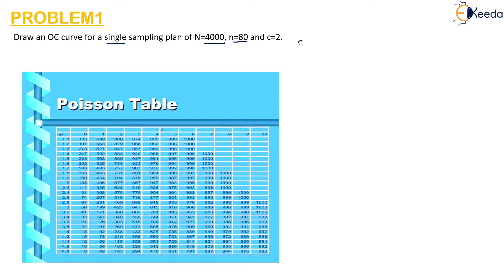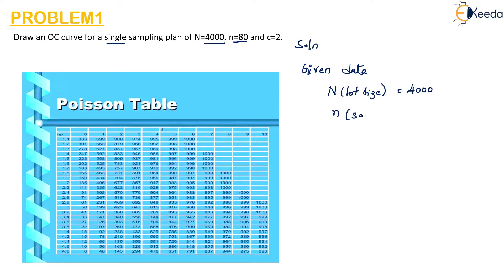For the solution, we will write the given data. N, that is the lot size, is 4000. Small n, that is the sample size, is 80. c is the acceptance number which is given as 2.